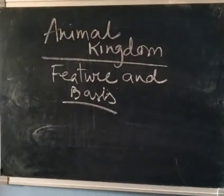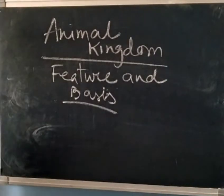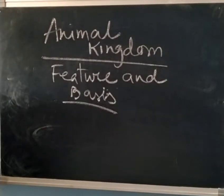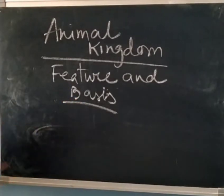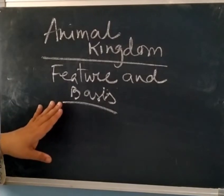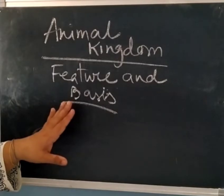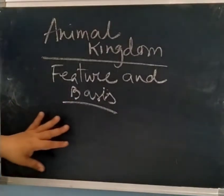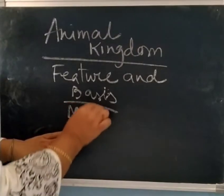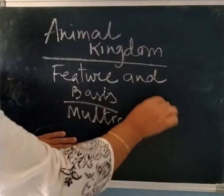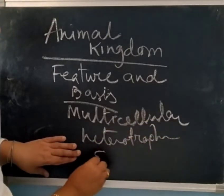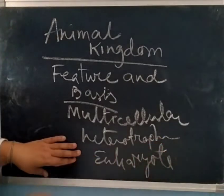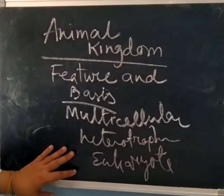In the features, we will first read about the level of organization. Classification helps in easy identification and also in assigning a systematic position to newly described species. In the Animalia kingdom, organisms are normally multicellular, heterotrophic, and eukaryotic. These are the first basic characteristics of the animal kingdom.